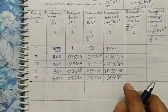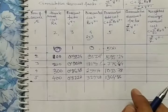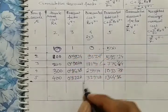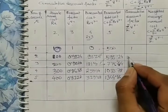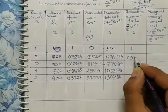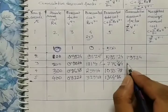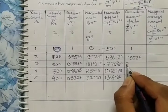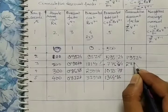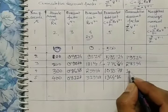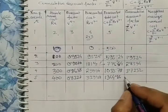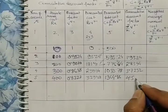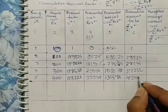The cumulative discount factor is the running summation of the discount factor column: year 1: 1, year 2: 1.9524, year 3: 2.8594, year 4: 3.7232, year 5: 4.5459.